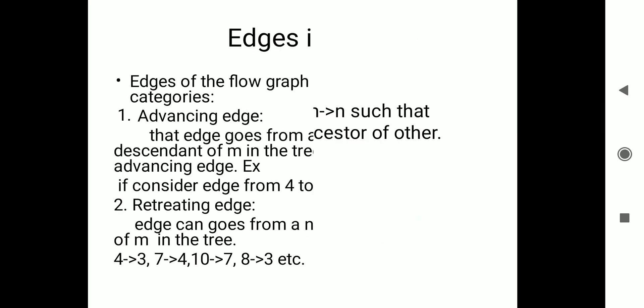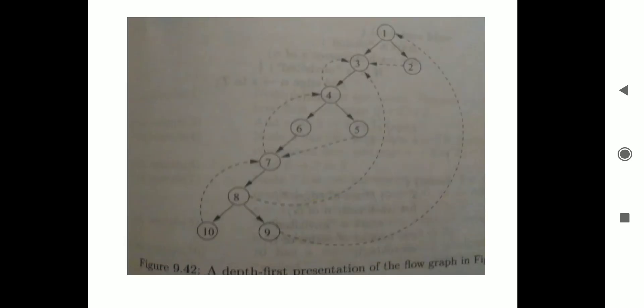So this is what we call loops in a flow graph. In an exam the question might be asked: list and explain the loops in a flow graph. We need to know the different properties: dominators, natural loops, pre-header concepts, and depth first ordering. These are the key concepts of loops in a flow graph. Thank you for watching.